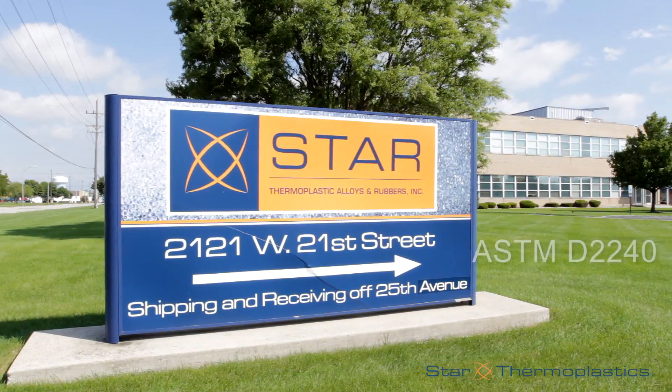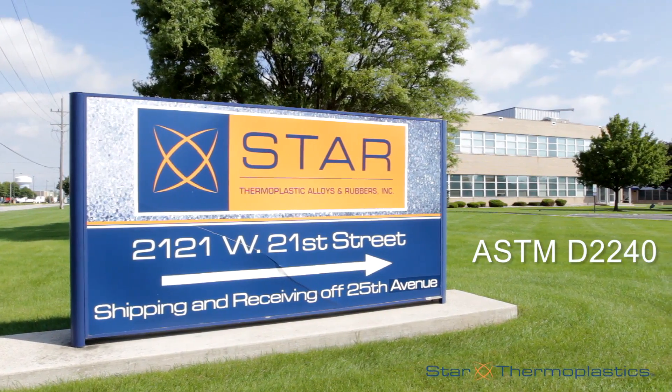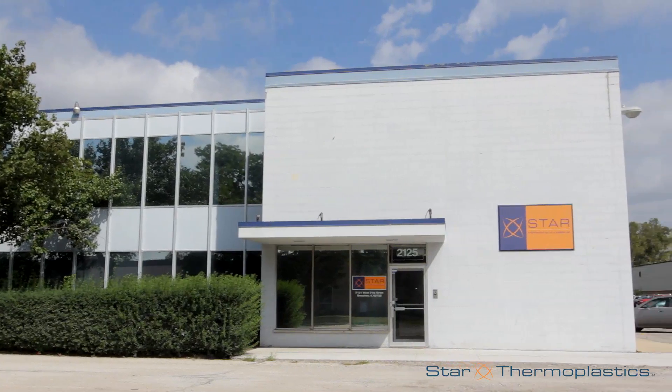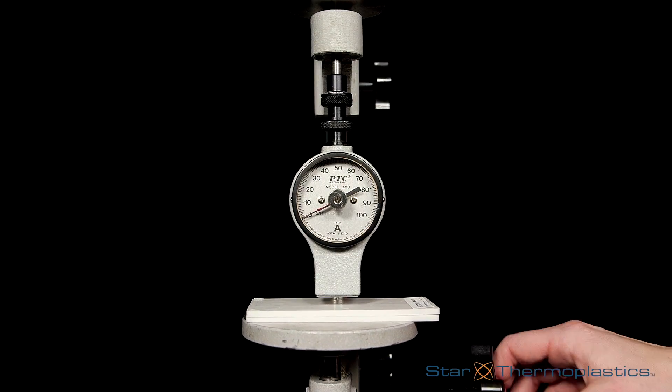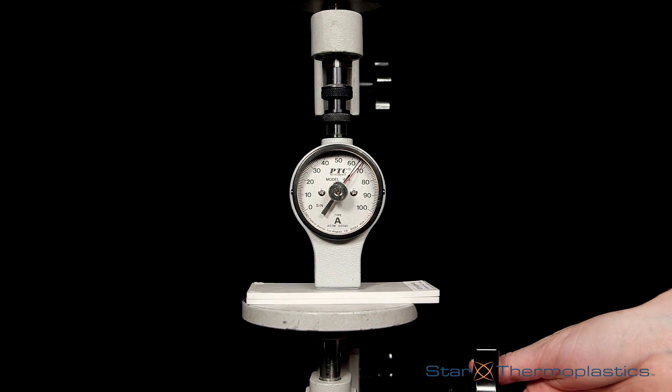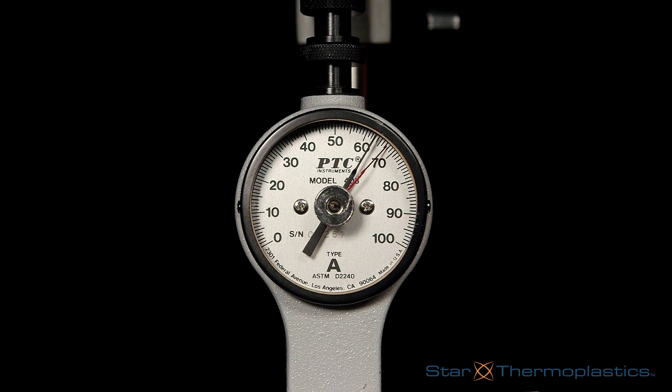Here at Star Thermoplastics, we follow the ASTM D2240 standard testing method for rubber property. The testing is done by placing the durometer onto a sample of material and then pressing down to get a reading on the scale.